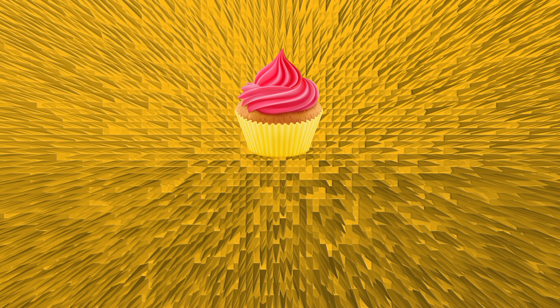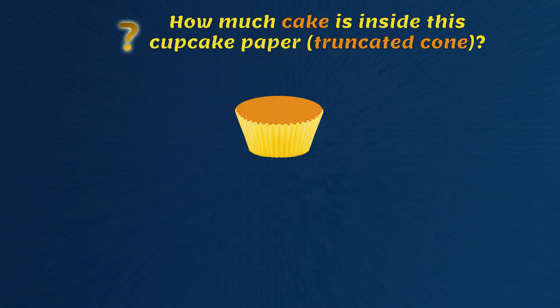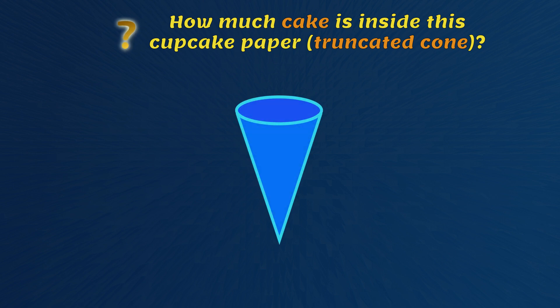For the last example, are you ready for a challenge? How much cake is inside this cupcake paper? It's called a truncated cone. Now look closely — the cake is actually the difference between the volume of the large cone and the volume of the small cone.